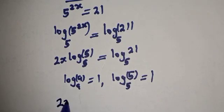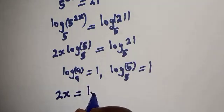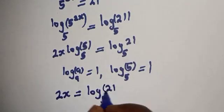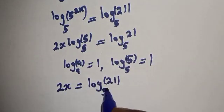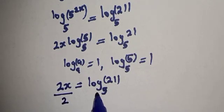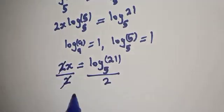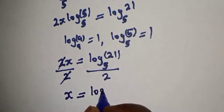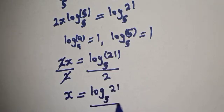Then 2x is equal to log 21 base 5. We are looking for the value of x. Let's divide both sides by 2. Divided by 2, divided by 2. Now this will cancel. x is equal to log 21 base 5 over 2.